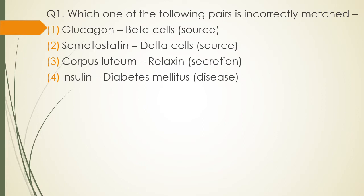Question 1. Which one of the following pairs is incorrectly matched? Option 1: Glucagon, beta cells source. Option 2: Somatostatin, delta cells source. Option 3: Corpus luteum, relaxin secretion. Option 4: Insulin, diabetes mellitus disease. The correct answer is option 1 — it is incorrectly matched. Beta cells secrete insulin and not glucagon.